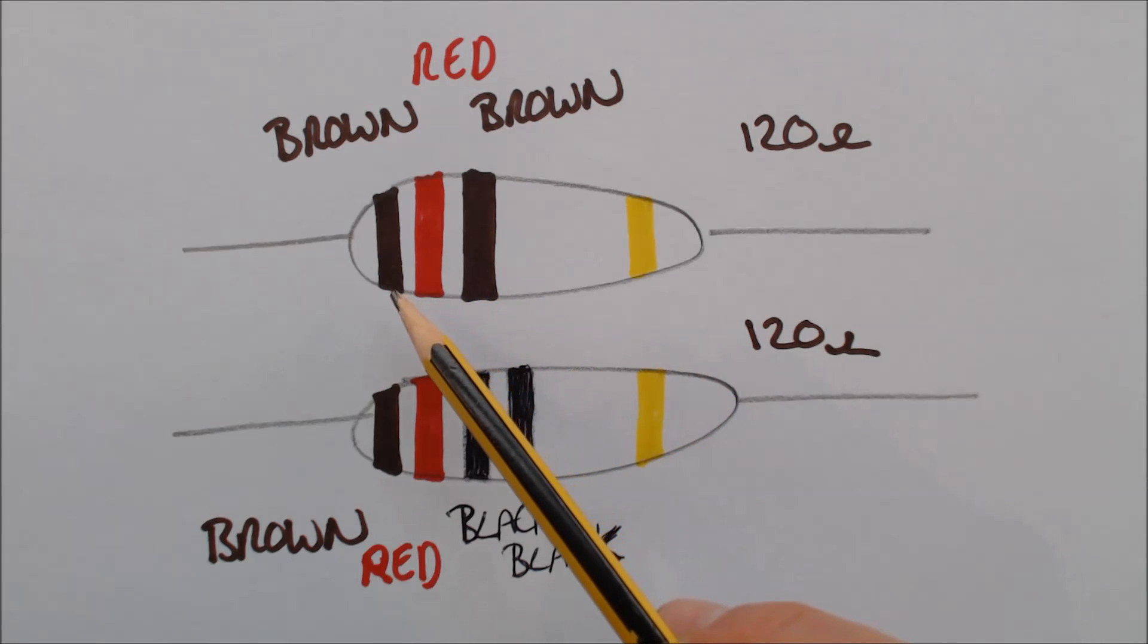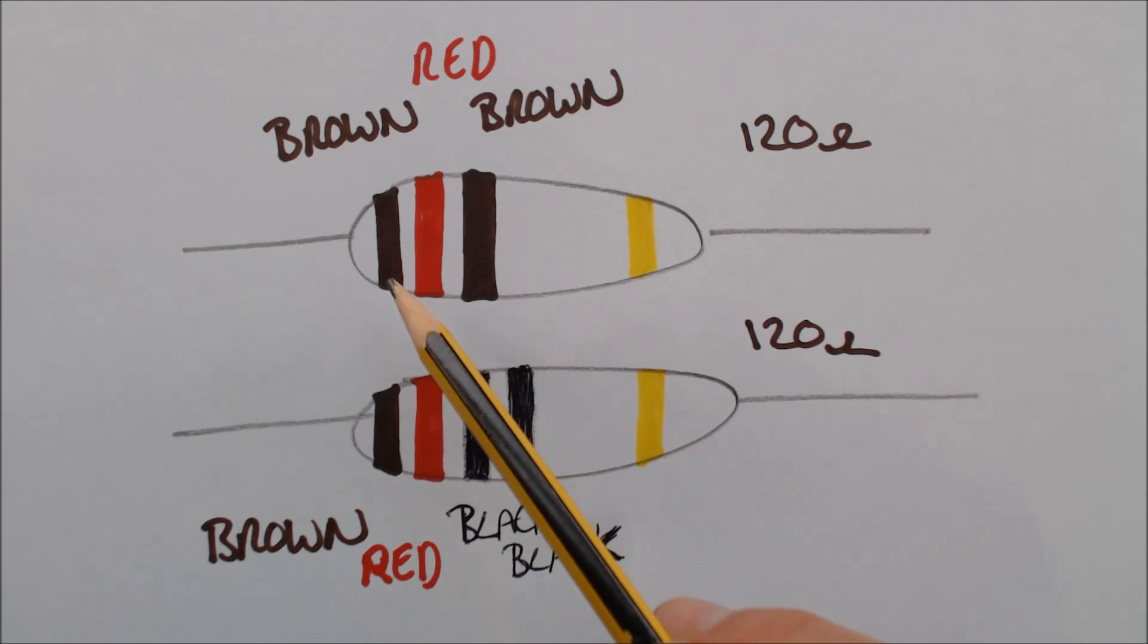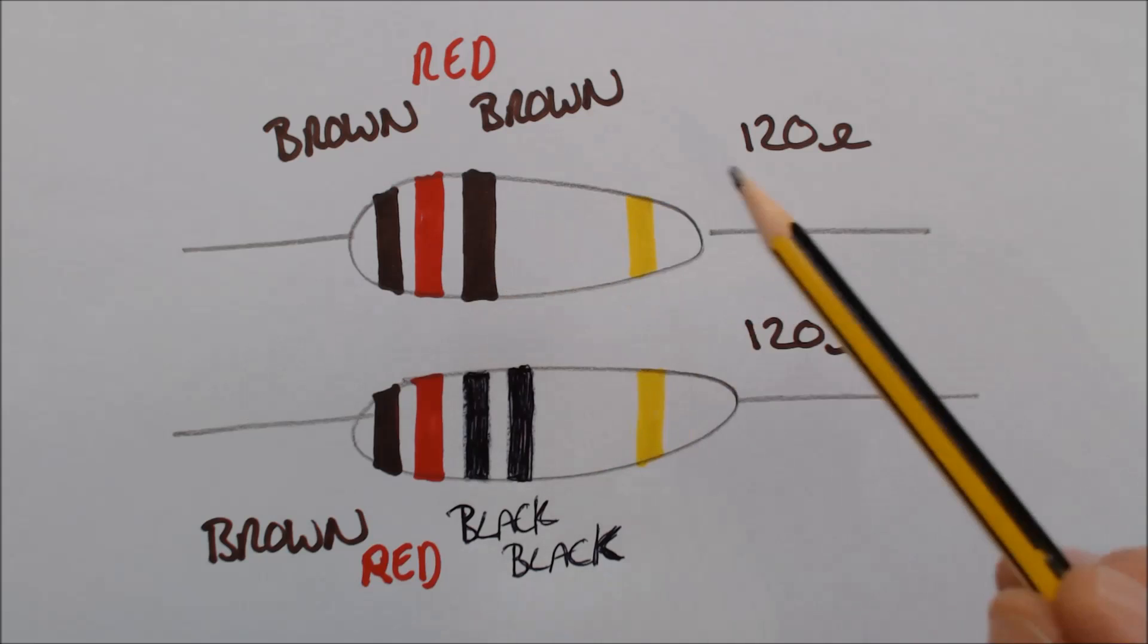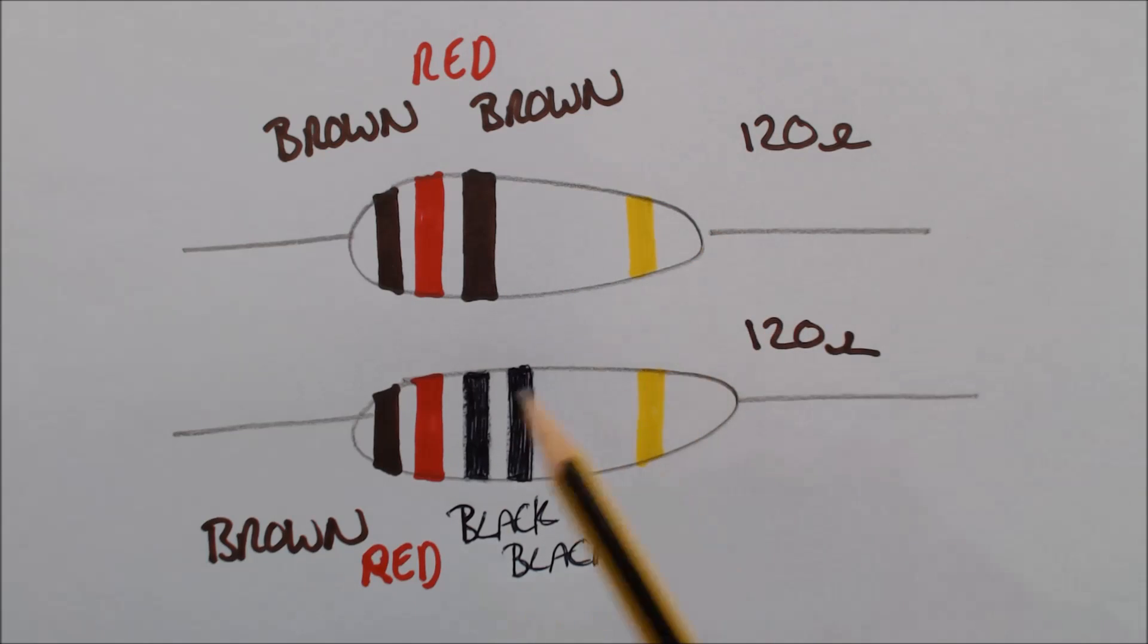The color code for 120 ohm resistor is going to depend on the number of bands on the resistor. If you've got three bands then you've got brown, red, brown. That fourth one there is the tolerance. If you've got four bands here then it's going to be brown, red, black, black and again that's the tolerance.